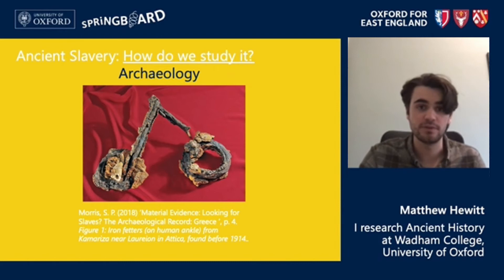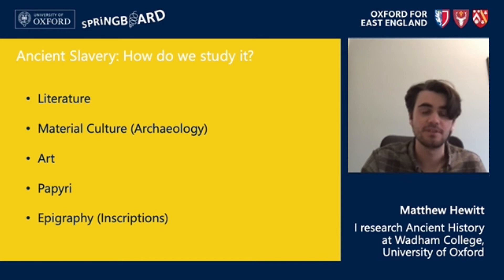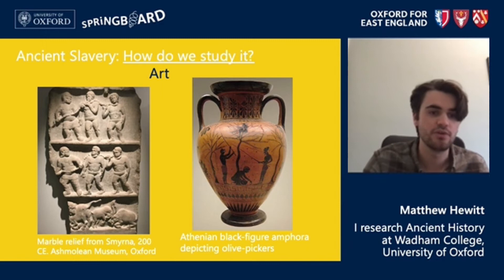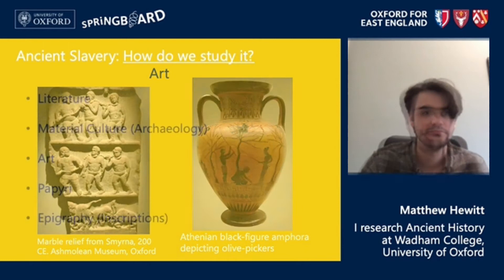We also have artistic depictions of ancient slavery, which can in their own right be extremely useful. I've put here a Roman example and an ancient Greek example — individuals being dragged off into slavery in the stone relief on the left, and on the right what are believed to be slaves working on an olive farm.